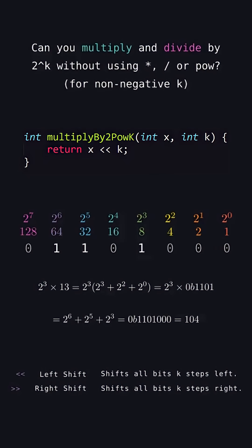In the general case, multiplying by 2 to the k will increase all powers of 2 in the sum by k, which can be achieved by shifting all the bits k spots to the left.